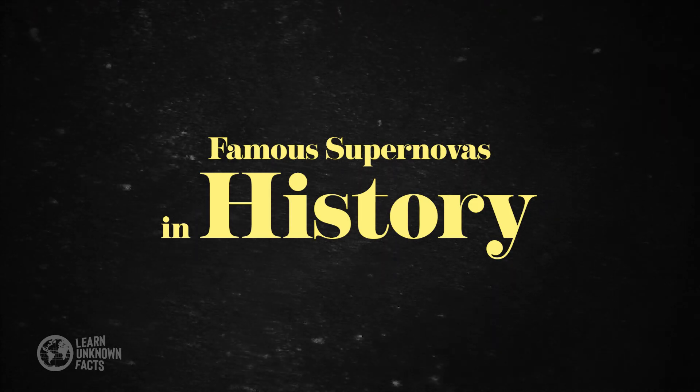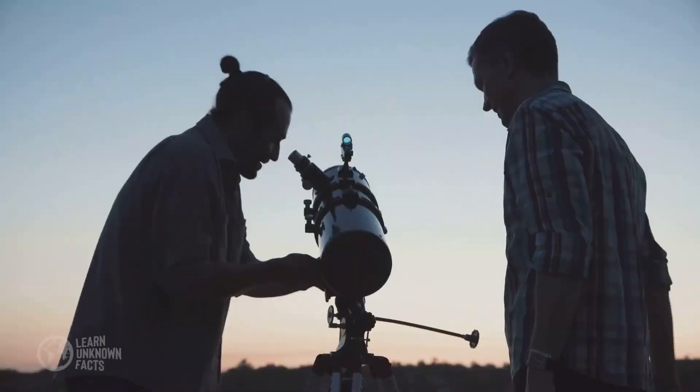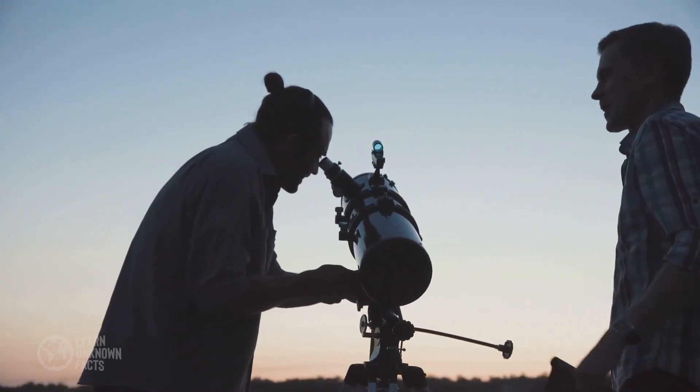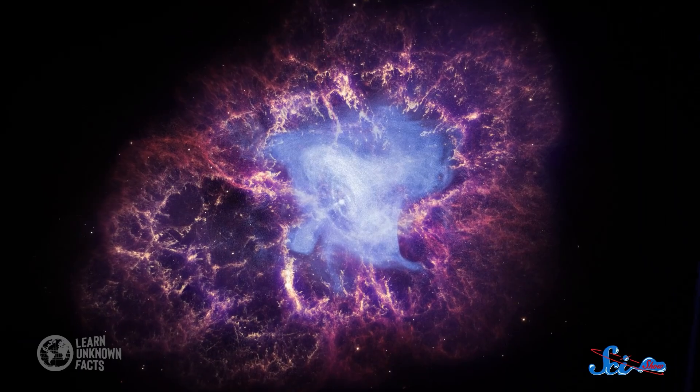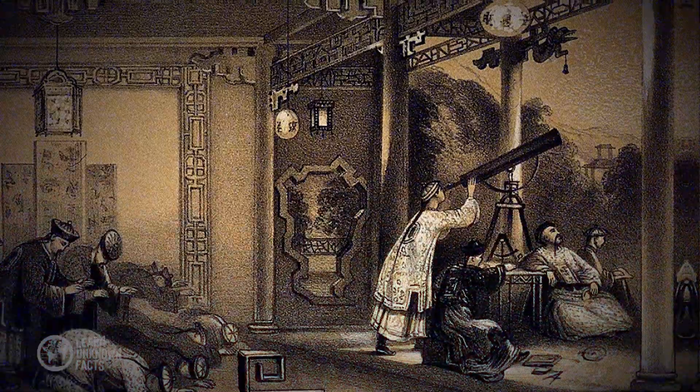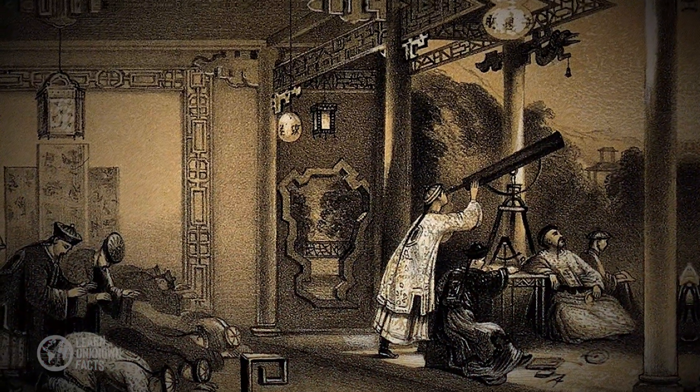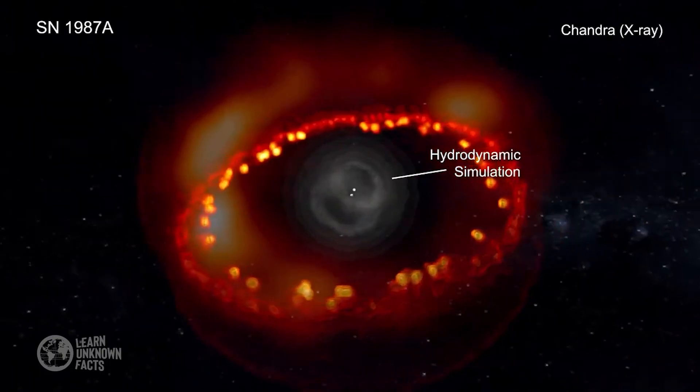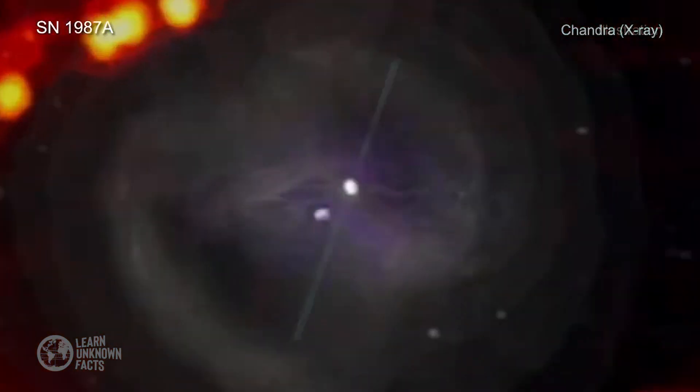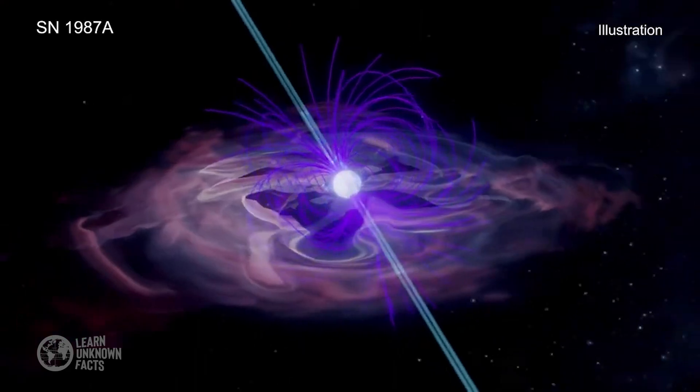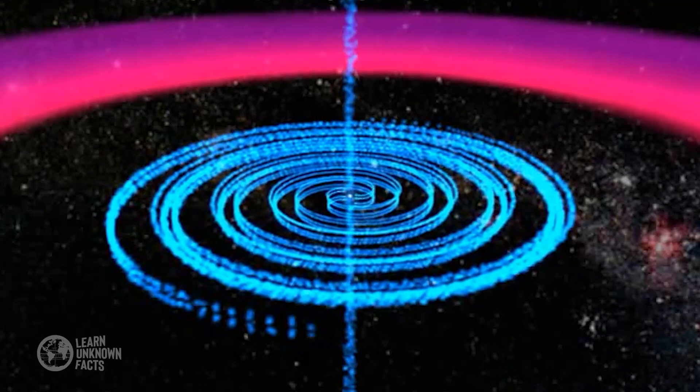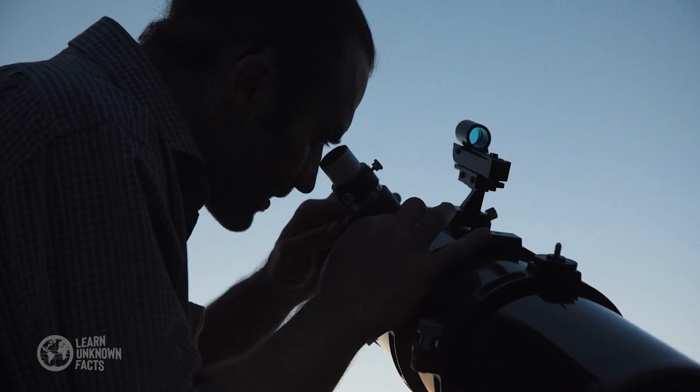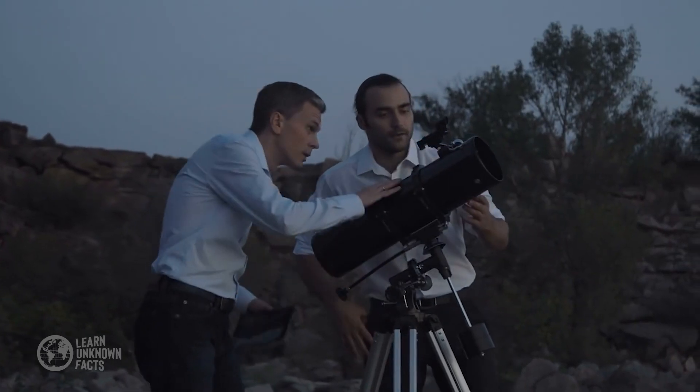Throughout history, several supernovas have been observed, leaving a lasting impact on our understanding of the cosmos. One of the most famous is SN1054, which was observed by Chinese astronomers and is now known as the Crab Nebula. This supernova explosion created a pulsar at its center, a rapidly rotating neutron star that emits beams of radiation. The Crab Nebula remains a key object of study, providing insights into the life cycle of stars.